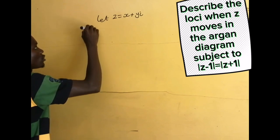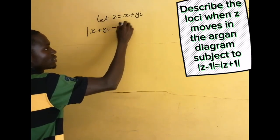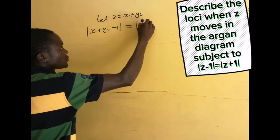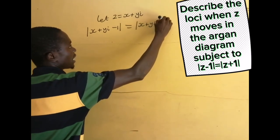Then, we are going to have the absolute value of x + yi - 1 equals the absolute value of x + yi plus 1.